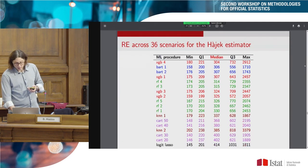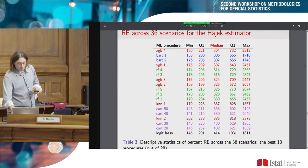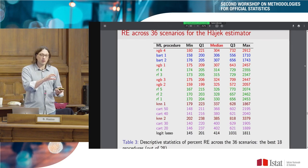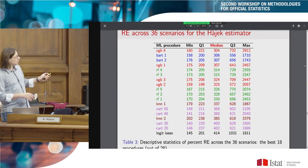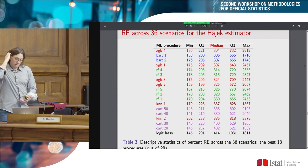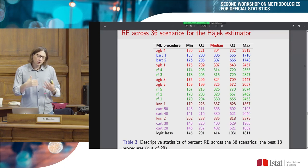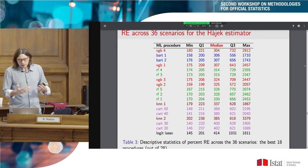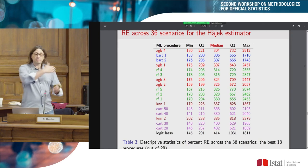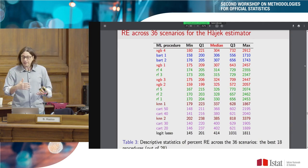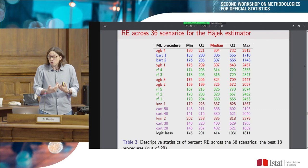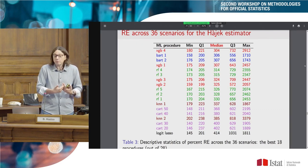The Hajek estimator is typically better than the PSA because the PSA is prone to extreme values, while the Hajek is less prone to extreme results due to the weighted sum in the denominator. This holds across 24 missing-at-random scenarios and 12 non-ignorable scenarios. Sometimes the differences are small, sometimes large, but typically the Hajek is better. The remaining question is: how do we choose the best procedure for a particular scenario?